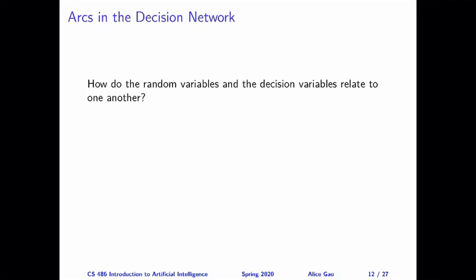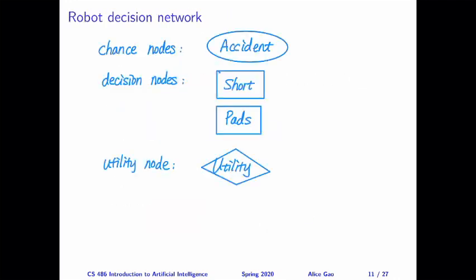So for this question here, recall that we came up with four different nodes. This is on the previous slide, accident, short, pads, and utility. So let's look at the chance nodes and the decision nodes. Accident, short, and pads. And let's think about how do these nodes affect each other.